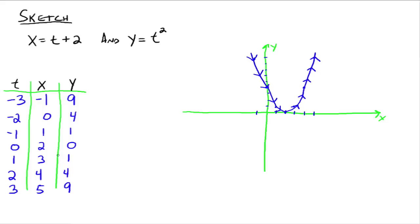So that's pretty simple: just do a three-column t-chart, increase your values for t, figure out what your x and y values need to be, go plot your x-y ordered pairs, and then indicate the direction the curve is traveling with little arrowheads.